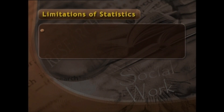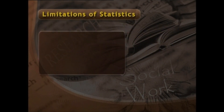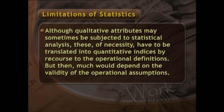Limitations of statistics: one obvious limitation of statistics is that it is readily applicable only to problems that are amenable to quantitative expression and treatment. Although qualitative attributes may sometimes be subjected to statistical analysis, these of necessity have to be translated into quantitative indices by recourse to operational definitions. But then much would depend on the validity of the operational assumptions.